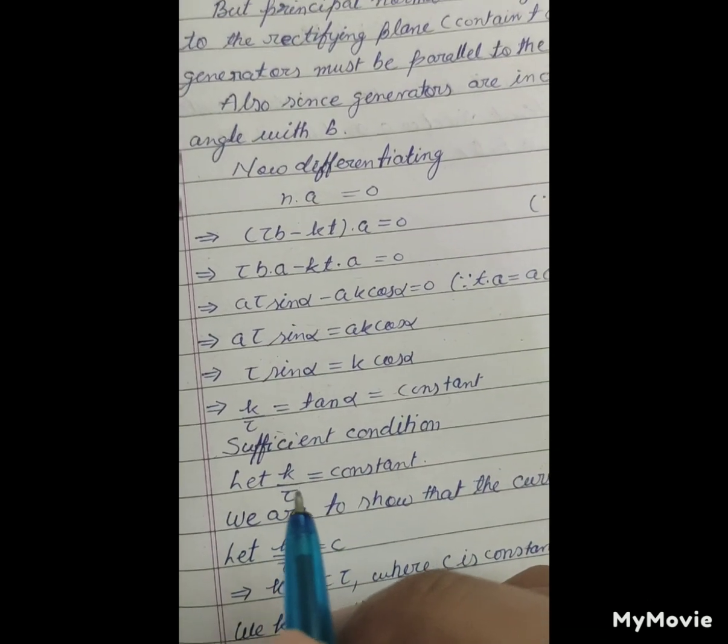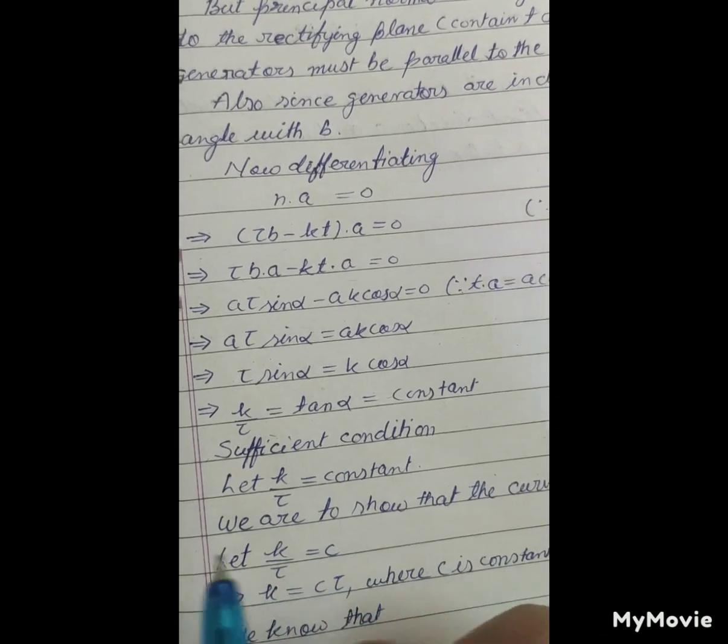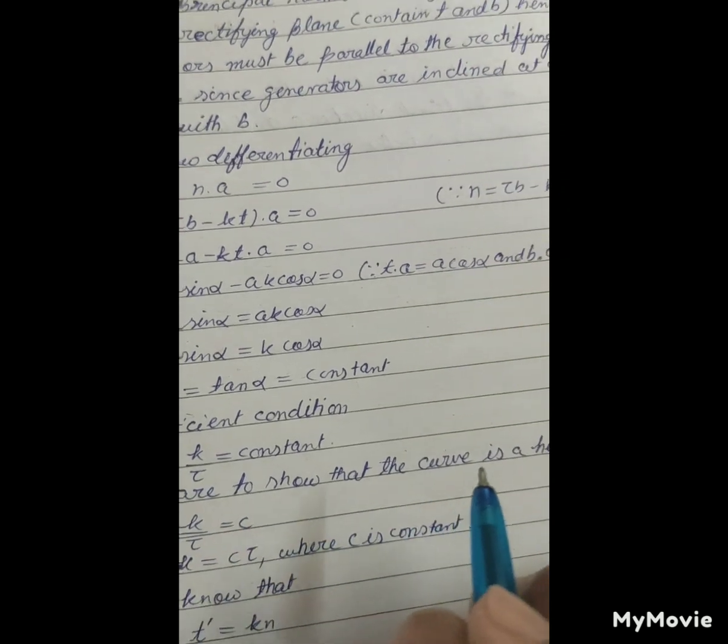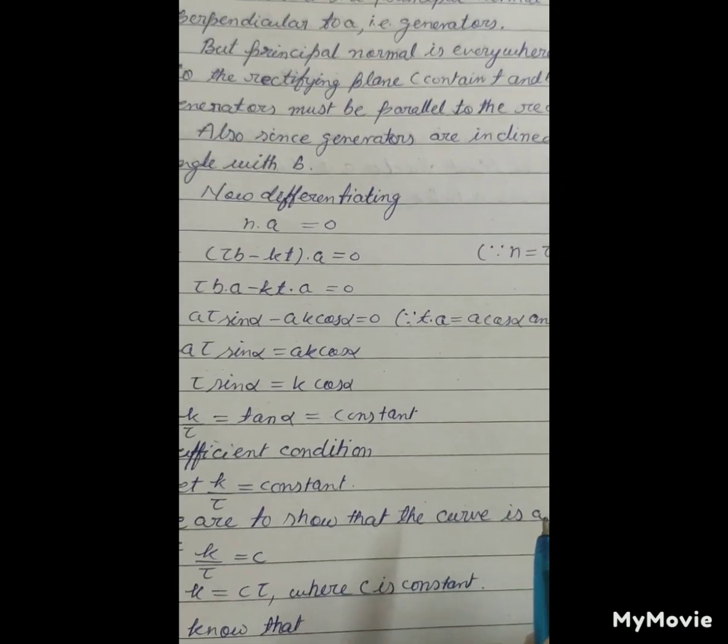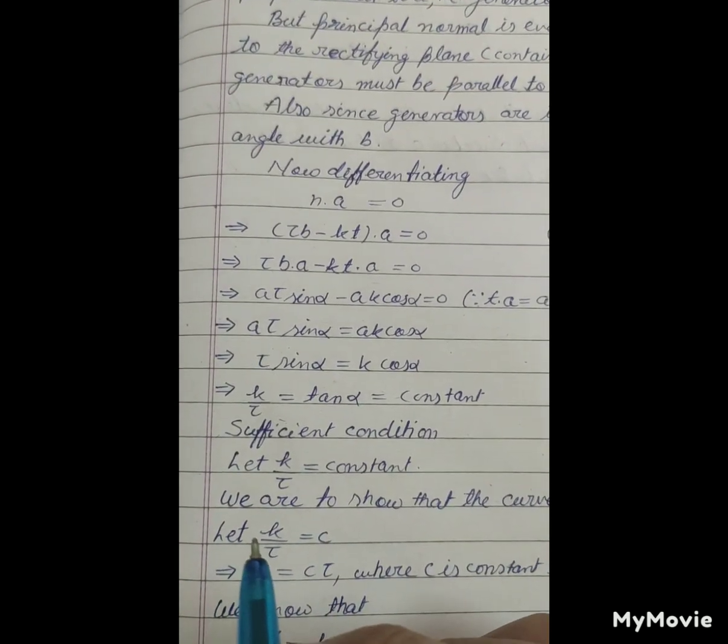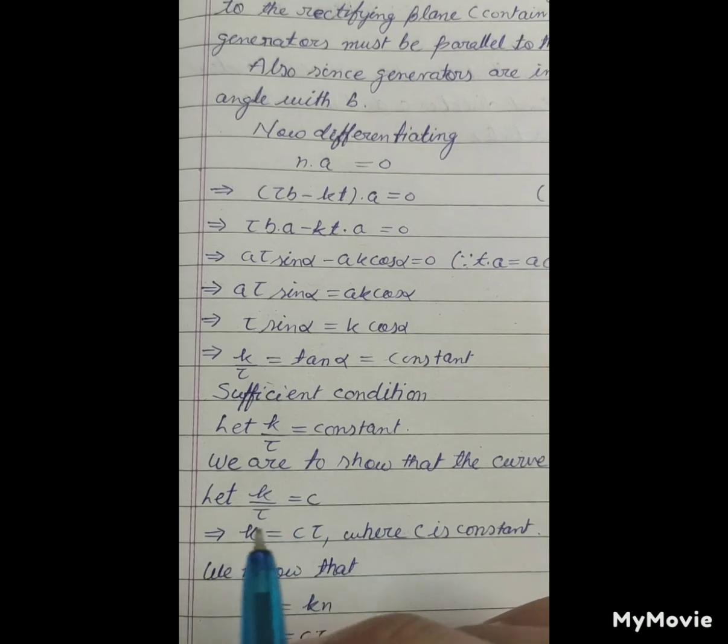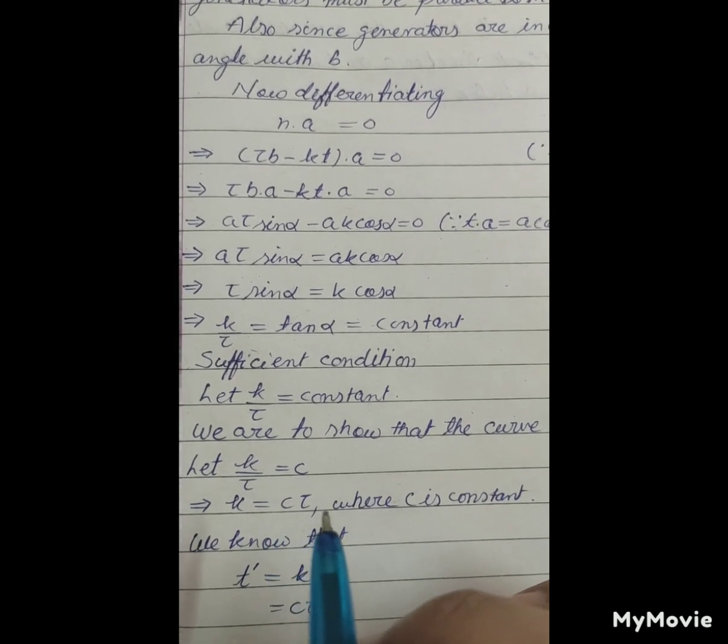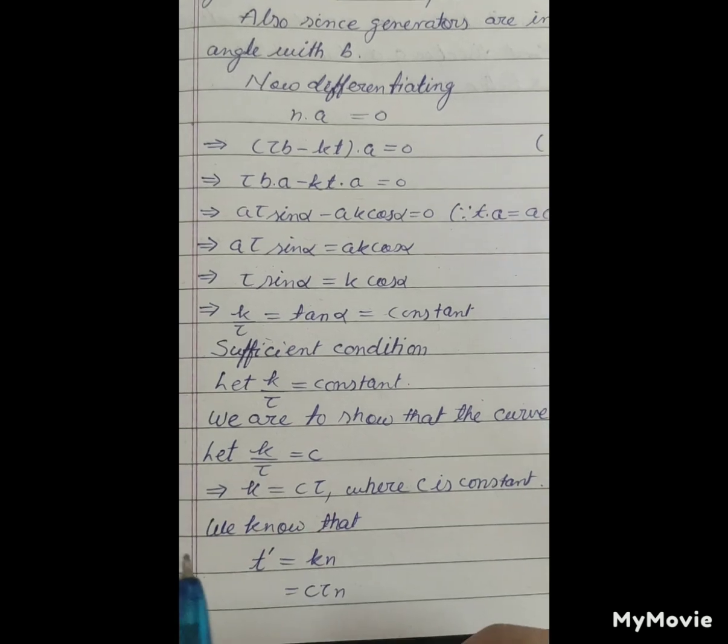Sufficient condition: let k upon τ equal to constant. We are to show that the curve is a helix. Let k upon τ equal to c, which implies k equals cτ, where c is constant.